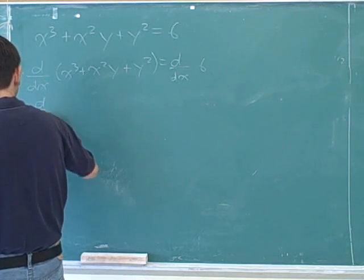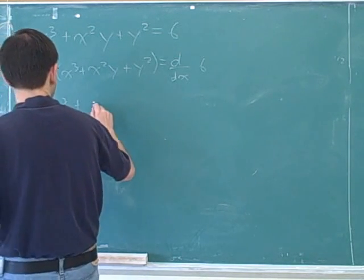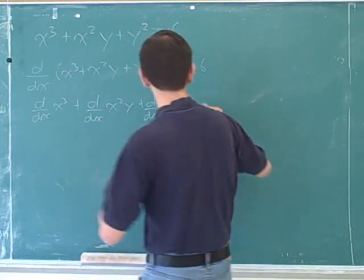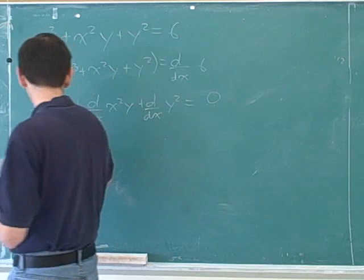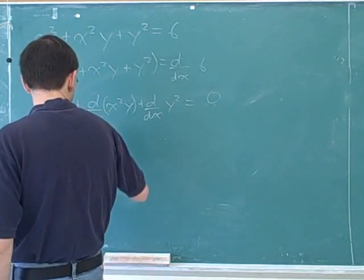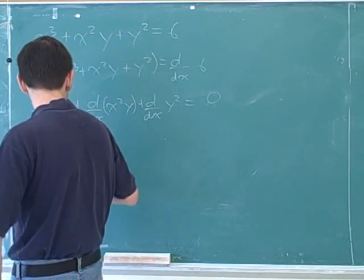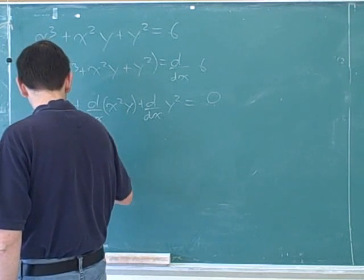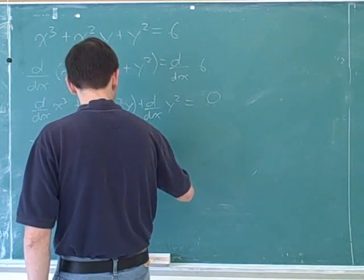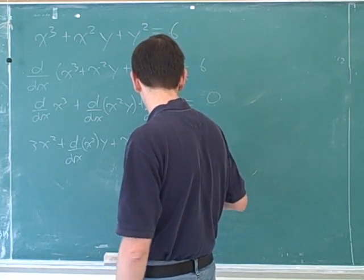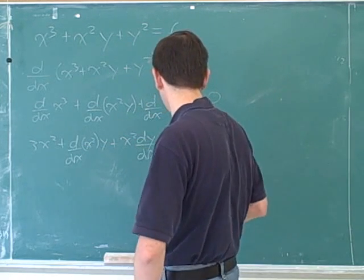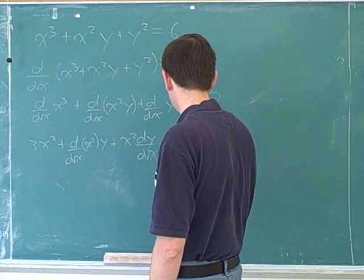So this would be derivative with respect to x of x cubed plus derivative with respect to x of x squared y plus derivative with respect to x of y squared. The derivative on the right hand side is a constant so that's zero. Derivative of x cubed is 3x squared. Alright. And here's where it gets a little bit trickier. So here we have to use the product rule. So here we have a product. So it's the derivative of the first term times the second plus the first term times the derivative of the second.